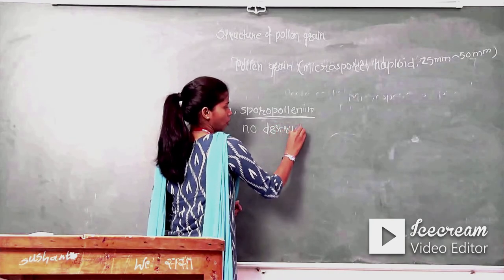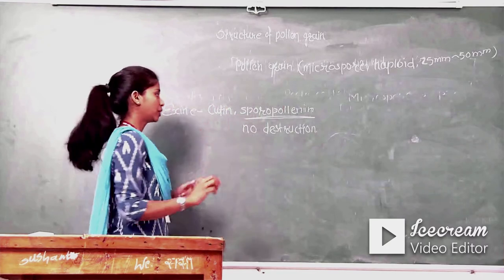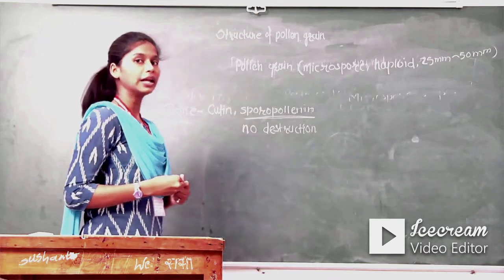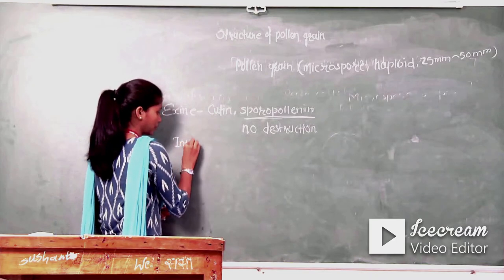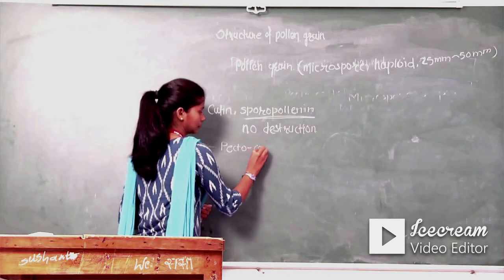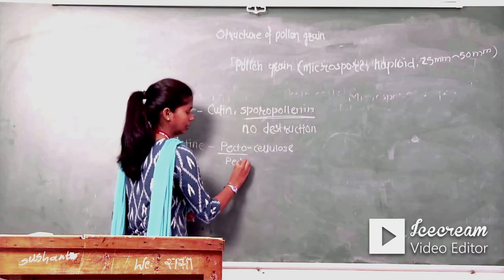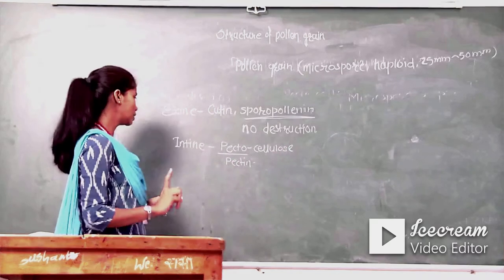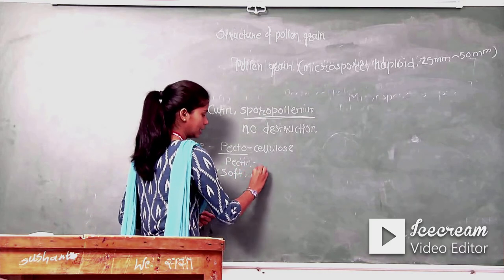There is no destruction of pollen grain due to the presence of this sporopollenin. The next layer is intine, which is made up of pectocellulose — where 'pecto' stands for pectin and 'cellulose' stands for cellulose. So intine is made up of pectocellulose and it is soft and elastic in nature.